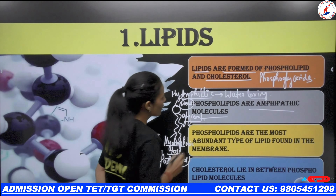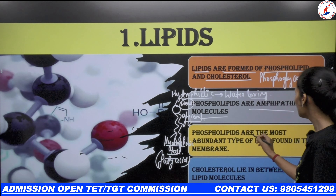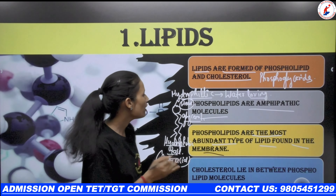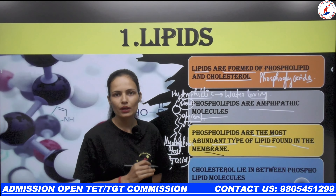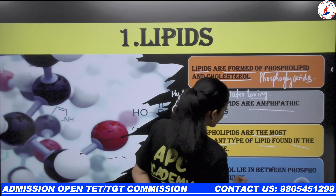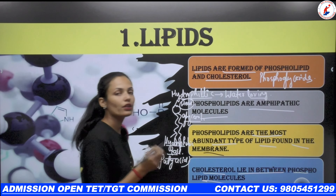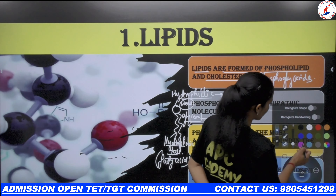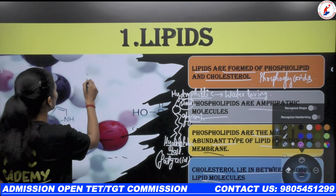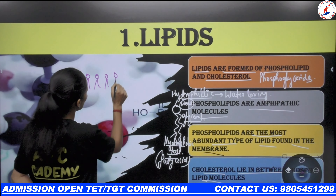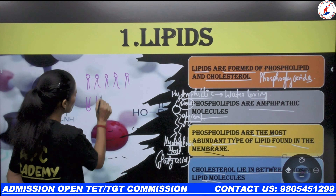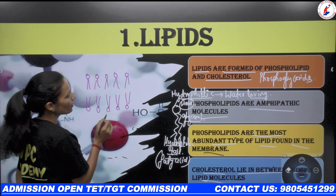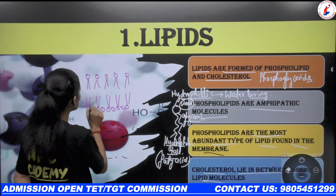Phospholipids are the most abundant type of lipids found in the membrane. Cholesterol and sterols are also present in the membrane. Sterols lie in between the phospholipid molecules. In the phospholipid bilayer, tails face each other to act as a water-resistant barrier. Cholesterol is present between the phospholipid molecules.